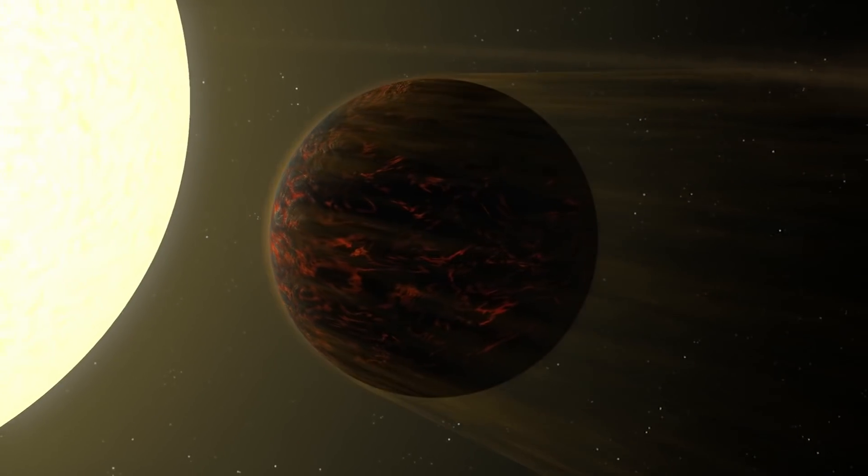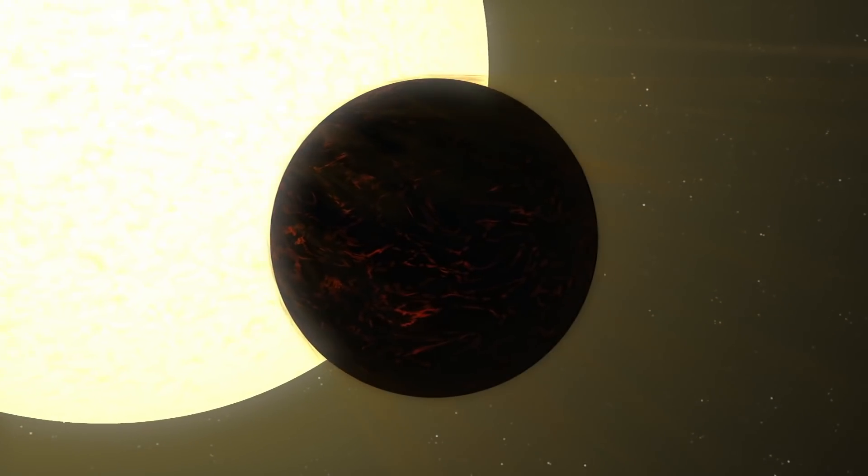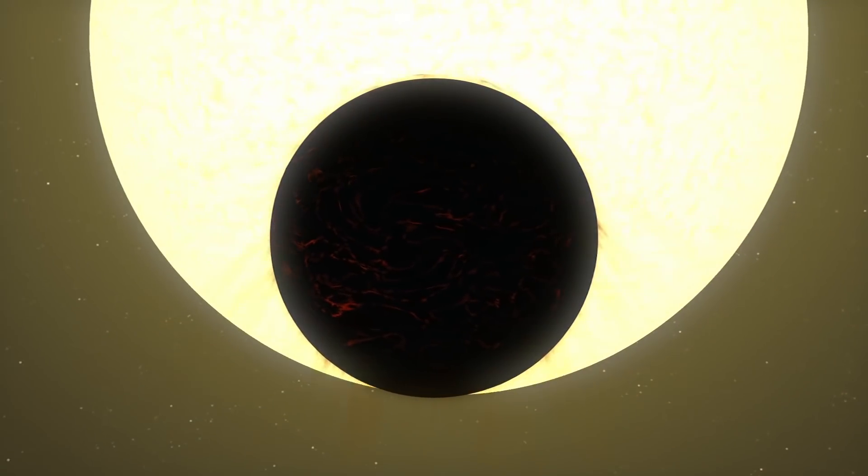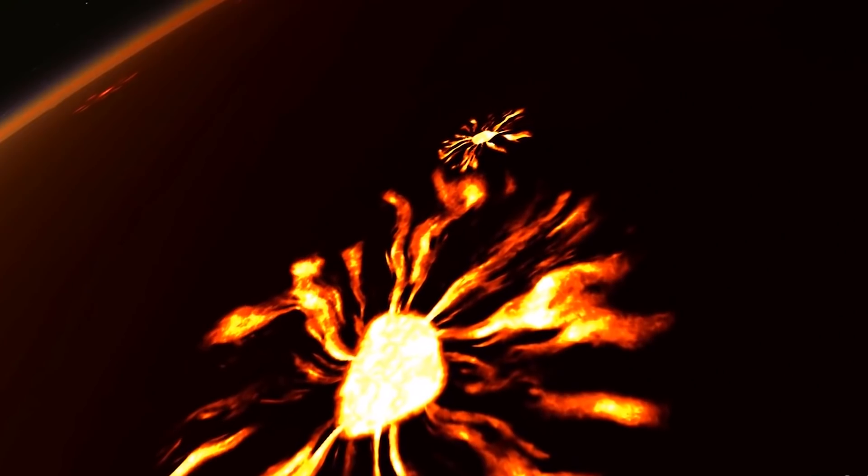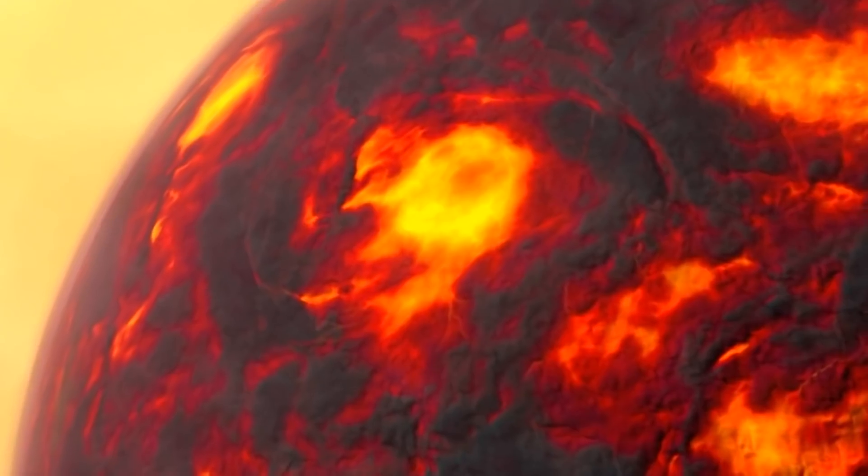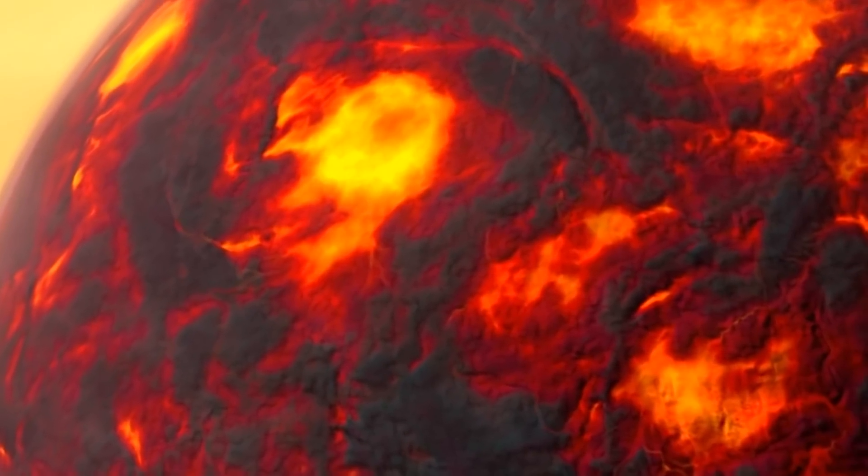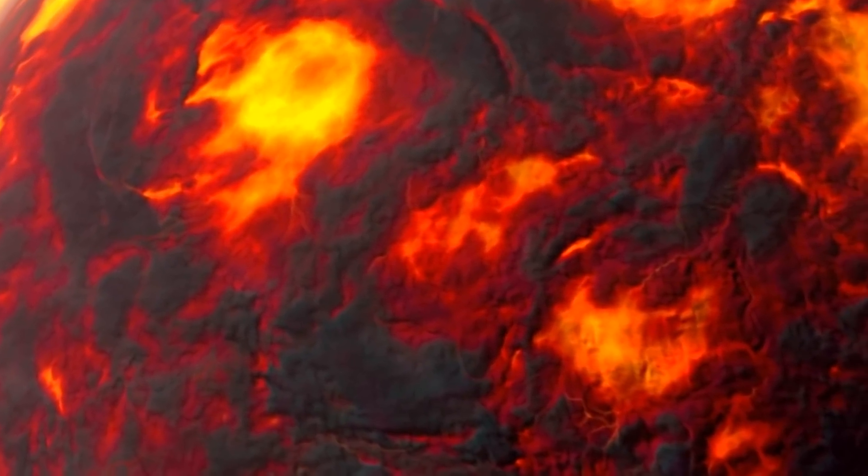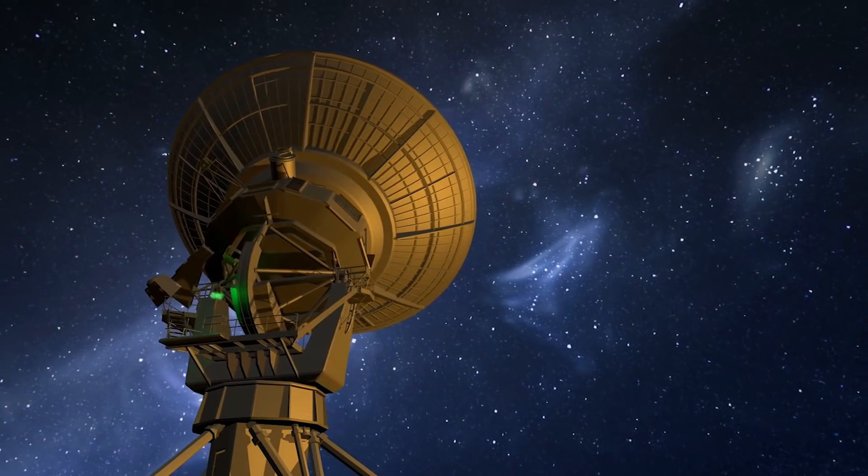Interestingly, one side of 55 Cancri e is always facing its star, meaning that it has a permanent day side and night side. Many scientists believe that this day side is covered in molten lava. The lava on the day side would reflect radiation from the star, contributing to the overall observed temperature of the planet.